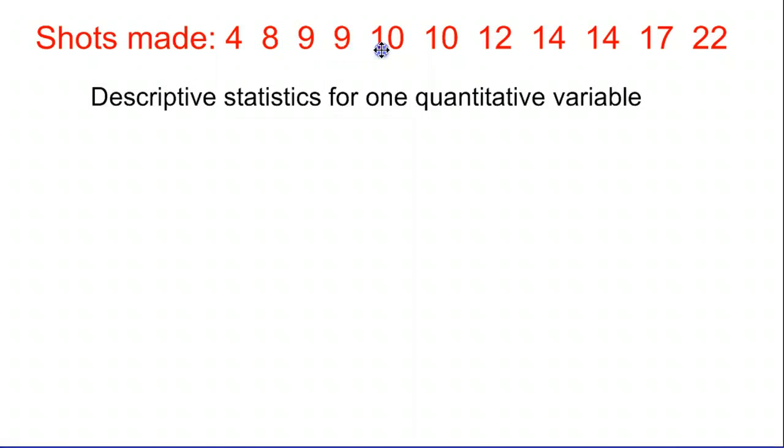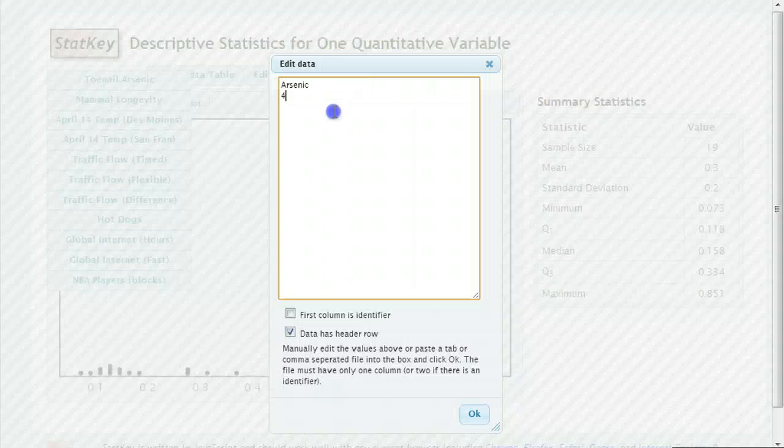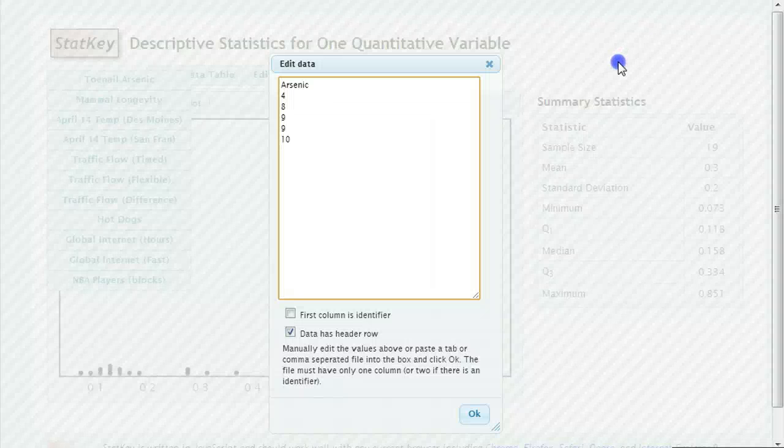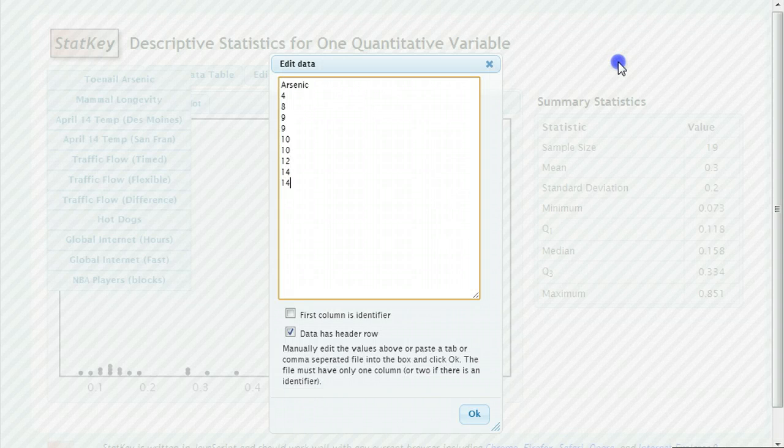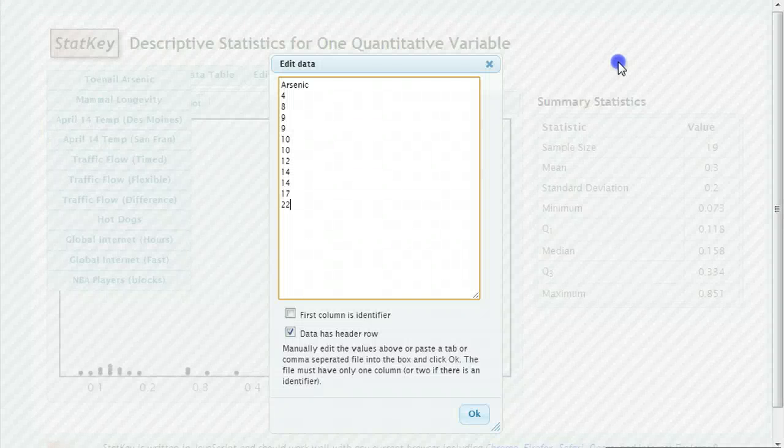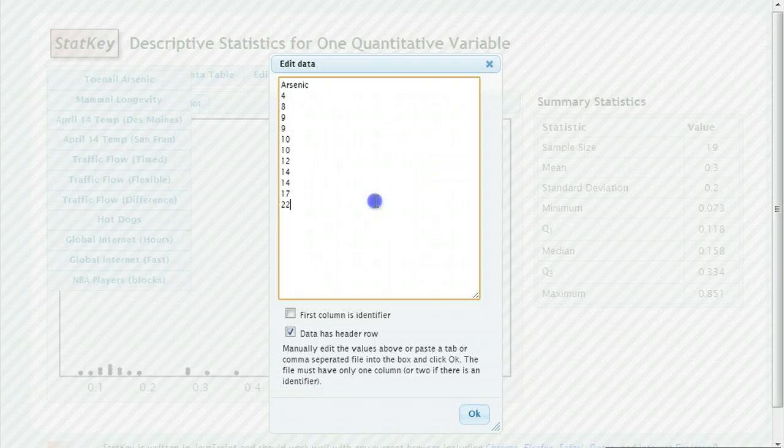4, 8, 9, 9, 10. So we type that in and we put an enter between each of our numbers. We have another 10, 12, 14, 14, 17. And if you need to pause the video while I do this, that's fine. And a 22 at the end. Once all the data is in, you hit OK.